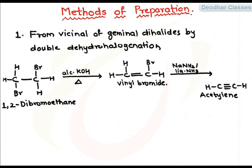The first raw material that can be used to form alkynes is vicinal or geminal dihalide. What is the difference between vicinal or geminal dihalide? In vicinal dihalide, two halogen atoms are present on adjacent carbons, and in geminal dihalide, both the halogen atoms are present on the same carbon.